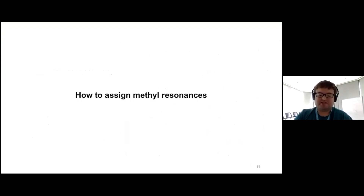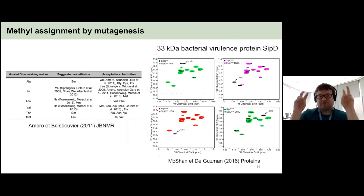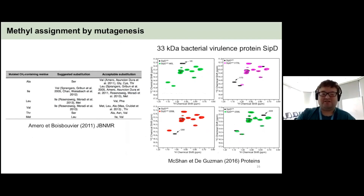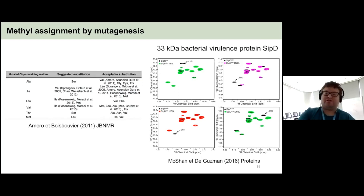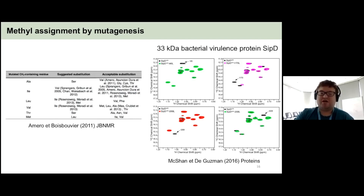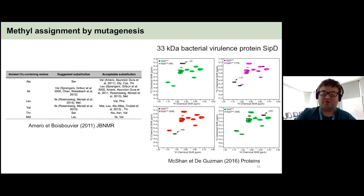How do you assign your methyl resonances? The easiest way to get the ground truth is by mutagenesis — mutating your residue into either an amino acid that doesn't have a methyl or another type with a different chemical shift range. For a 33 kilodalton protein from my PhD, we used isoleucine-to-leucine mutations, which very easily allowed assignment of methyl groups even without deuteration. But if you have 100 methyl groups, you don't want to do 100 such experiments, so you need other methods.